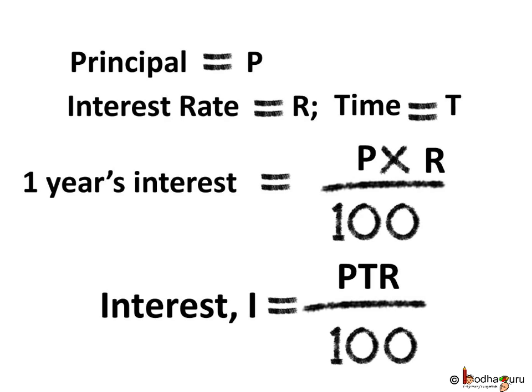First, let us revise what is interest. If principal — that is the amount borrowed — is represented by P and the interest rate is R, then one year's interest is equal to P multiplied by R divided by 100. Let us represent the time in years by T, so interest becomes P multiplied by T multiplied by R divided by 100.